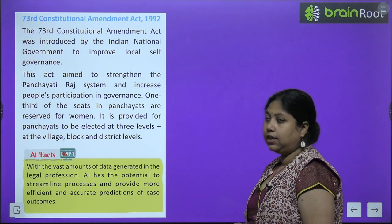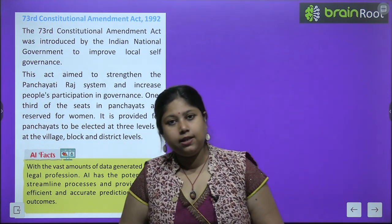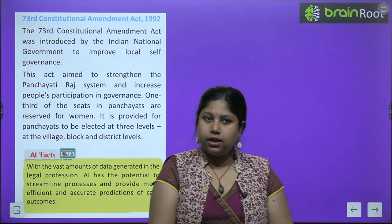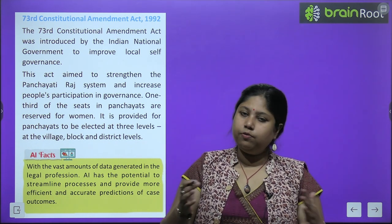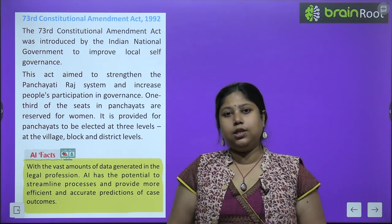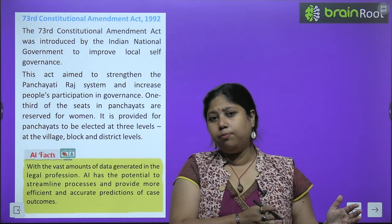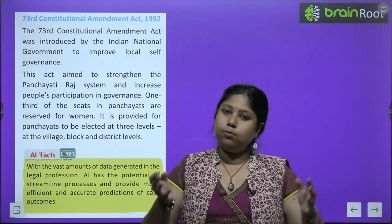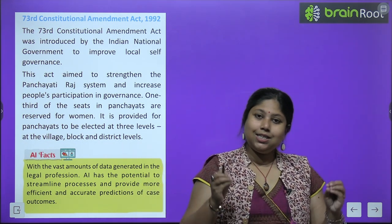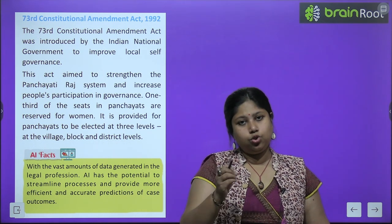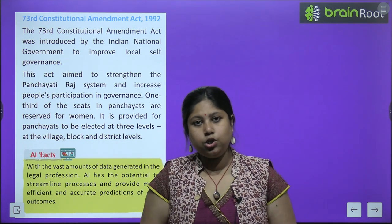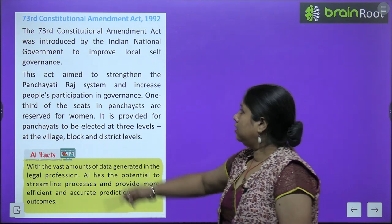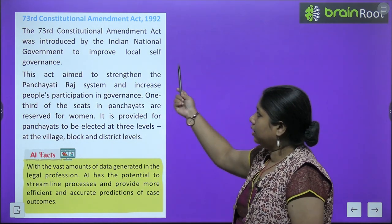The 73rd Constitutional Amendment Act was done in 1992. The Indian Constitution was written after independence in the 1950s. The things that existed then and now are very different — some rules that were important then are no longer needed, and new laws are required. We can make changes to the Constitution from time to time — not completely replace it, but make small improvements. These small changes made for betterment are called amendments.